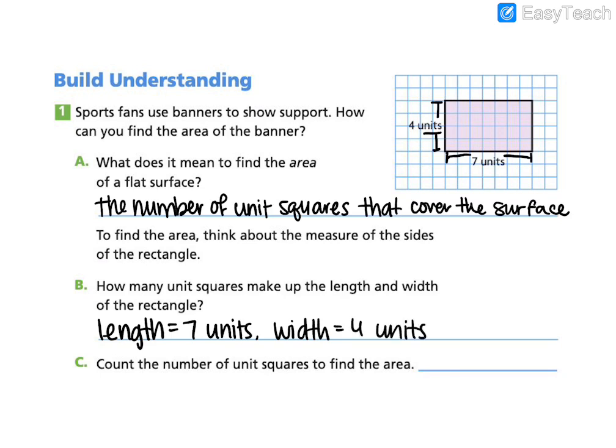Letter C is asking you to count the number of unit squares to find the area. So go ahead and count up the squares that are inside this rectangle. Pause if you need more time. Alright, and we find that there are 28 unit squares.